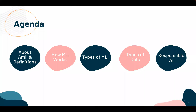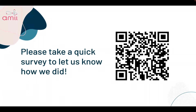In summary, today's session covered: definitions in the field and how machine learning works at a high level; the different types of machine learning; types of data and how to avoid bias; and responsible AI. Please take a moment to fill out the brief survey using the QR code — your feedback helps Amii target future services and improve these presentations.